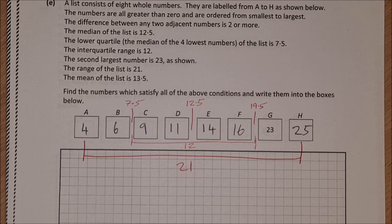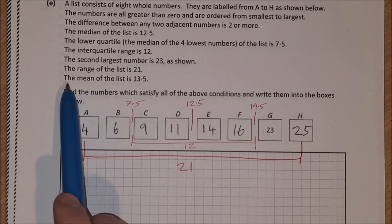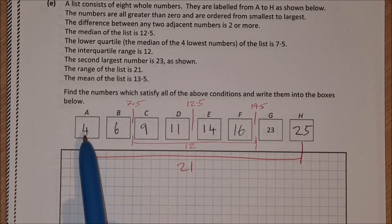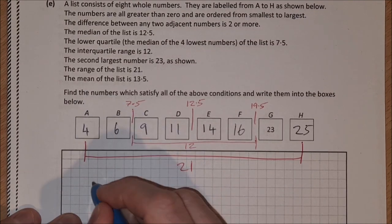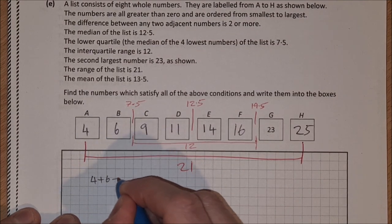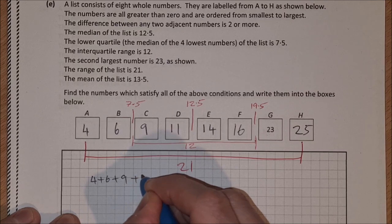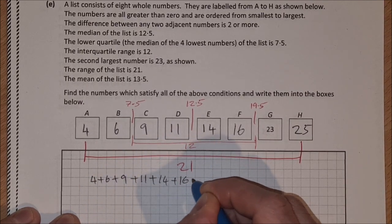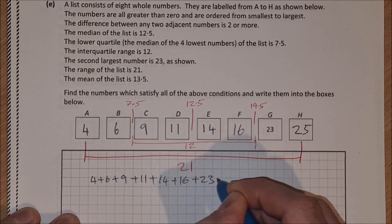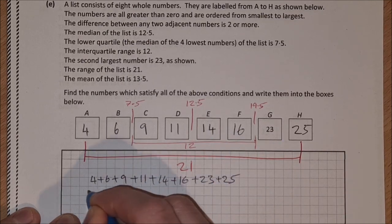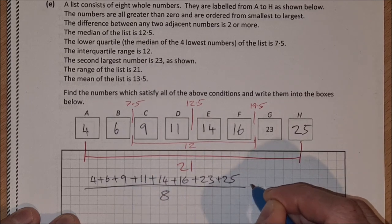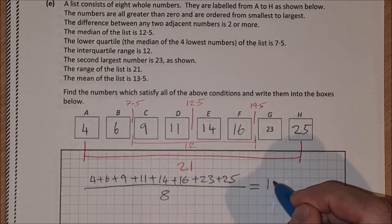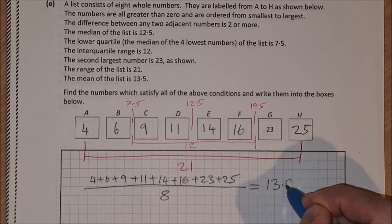Now there is one last thing to check out. The mean of the list is 13.5. So we need to add them together. So it would be 4 plus 6 plus 9 plus 11 plus 14 plus 16 plus 23 plus 25 divided by 8. And is that equal to 13.5? It is.